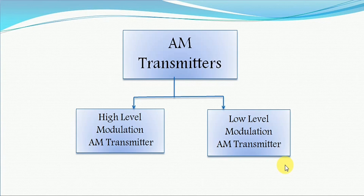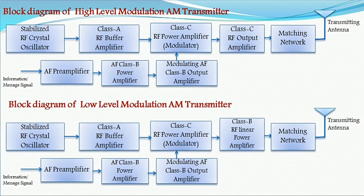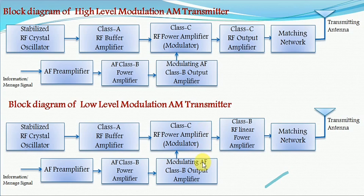Let us see what blocks are involved in order to perform the high power modulation and the low power modulation. In the block diagrams of both the high level and low level modulation AM transmitters, if you clearly observe, up to the class C RF power amplifier — that is, the modulator — the blocks involved are the same.